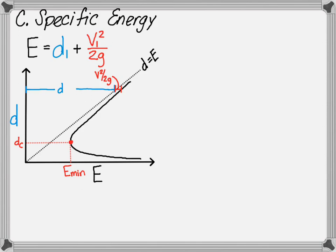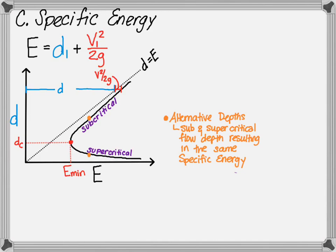The greater the flow depth is from critical depth, the lower the velocities will be, resulting in subcritical flow. When depths of flow are less than critical, the velocities within the channel will be much higher, resulting in supercritical flow. For all energies greater than the minimum energy, there are two possible depths — one depth is associated with subcritical flow and the other with supercritical flow. These depths are called alternative depths.